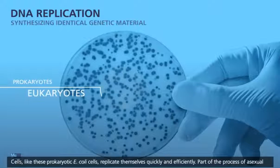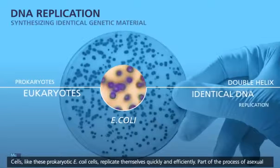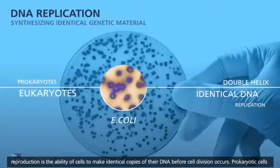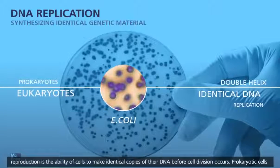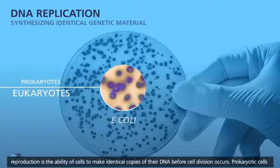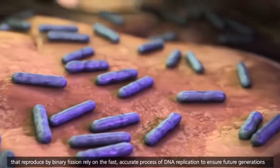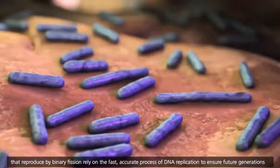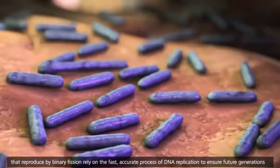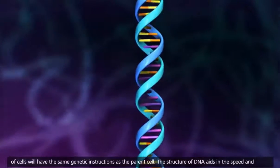Cells like these prokaryotic E. coli cells replicate themselves quickly and efficiently. Part of the process of asexual reproduction is the ability of cells to make identical copies of their DNA before cell division occurs. Prokaryotic cells that reproduce by binary fission rely on the fast, accurate process of DNA replication to ensure future generations of cells will have the same genetic instructions as the parent cell.